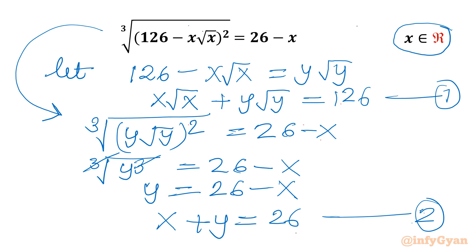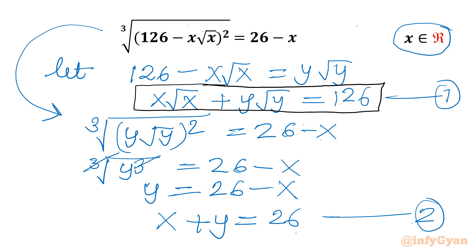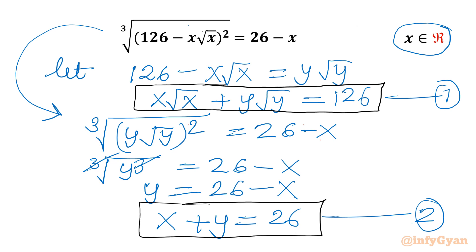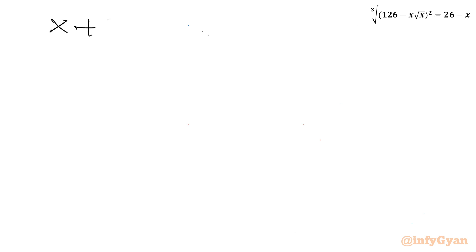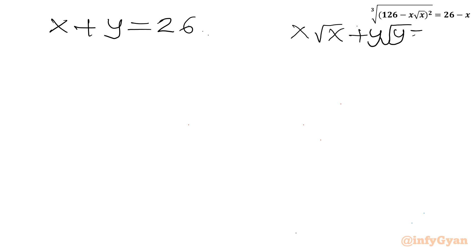So we have two equations here for this new system: x + y = 26 and x√x + y√y = 126. Let us solve these equations.